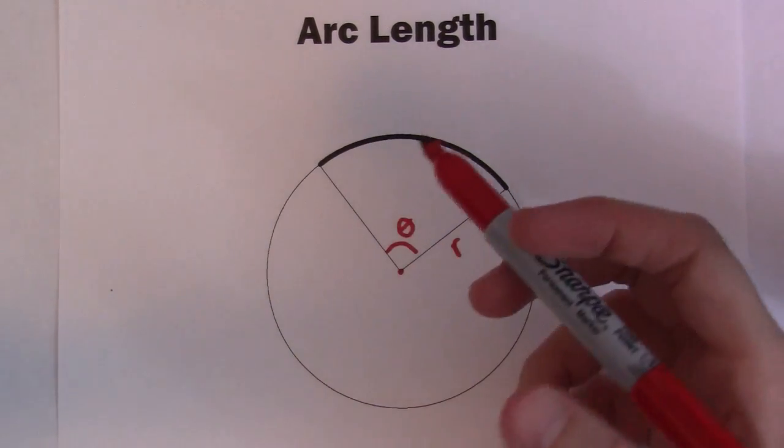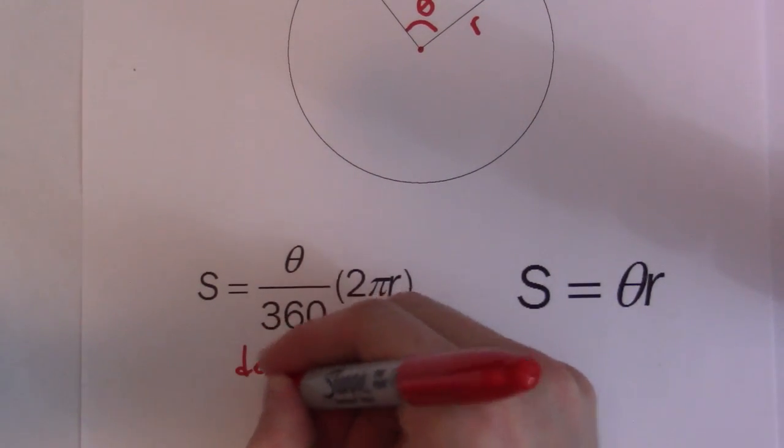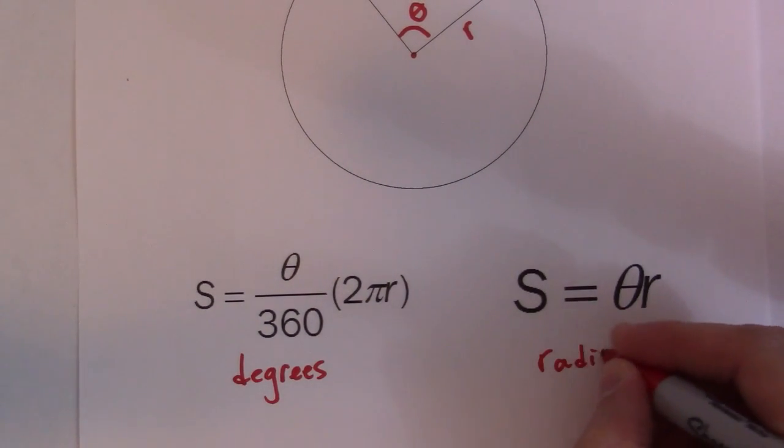And given these two pieces of information we can find out the length that this angle traces around the circle. So there's two separate formulas for this. One is for degrees, so if you have an angle in degrees then you can use this one. Or if you have one in radians you can use this one.